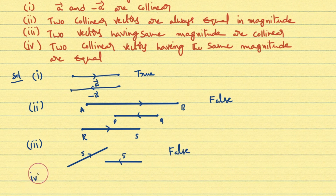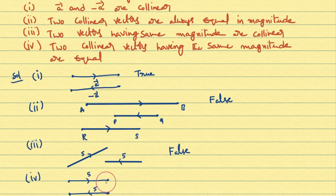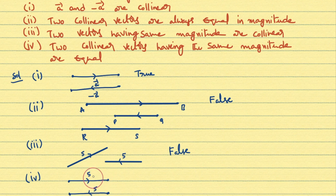Fourth bit, the last of this exercise: Two collinear vectors having the same magnitude are equal. Consider two collinear (parallel) vectors each of 5 units but in opposite directions. They have the same magnitude but opposite directions. Equal vectors require the same magnitude AND the same direction. Since direction is not the same here, this statement is FALSE.